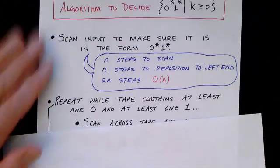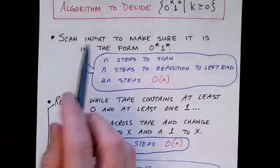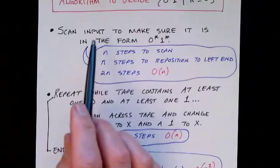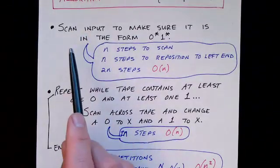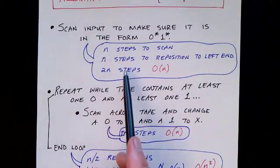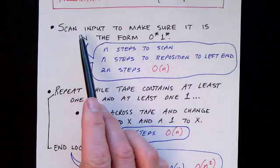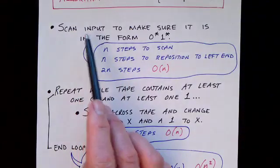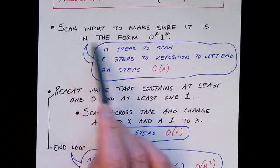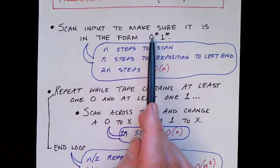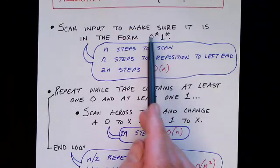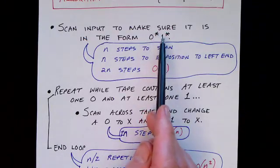Here is our algorithm. I'm showing the algorithm in black, and I'm going to talk about that first, then come back and talk about what's in the bubbles. The Turing machine has on its input tape a string of zeros and ones. So it scans this string from the left end all the way to the right end to make sure that it's a bunch of zeros followed by a bunch of ones — in other words, the order is correct, with no zeros coming after ones.